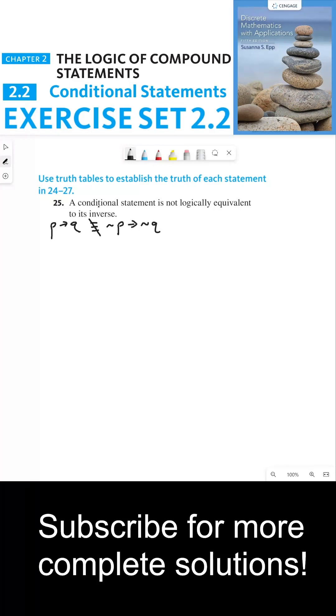So this says we need to use truth tables, so let's build them. P implies Q is false precisely when P is true and Q is false. All the other times, the statement is true.